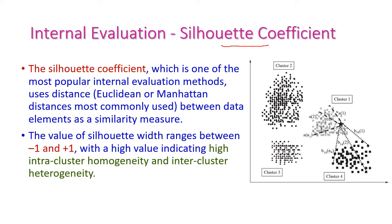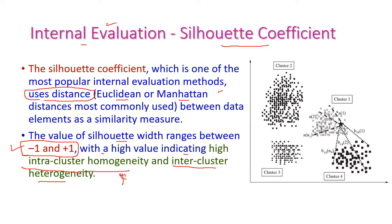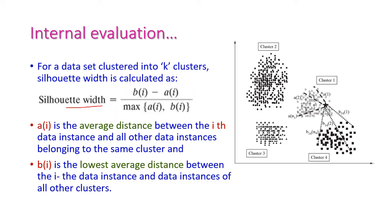Next, we will see the Silhouette coefficient from internal evaluation. This is one of the most popular methods used to identify the distance between two data elements, using Euclidean distance and Manhattan distance. The Silhouette value lies between −1 to +1. A high value indicates high intra-cluster homogeneity and inter-cluster heterogeneity. Homogeneity means the difference between data items inside the cluster is very less, and heterogeneity means the difference between clusters is very high. The formula for Silhouette width is: S(i) = (B(i) − A(i)) / max(A(i), B(i)).